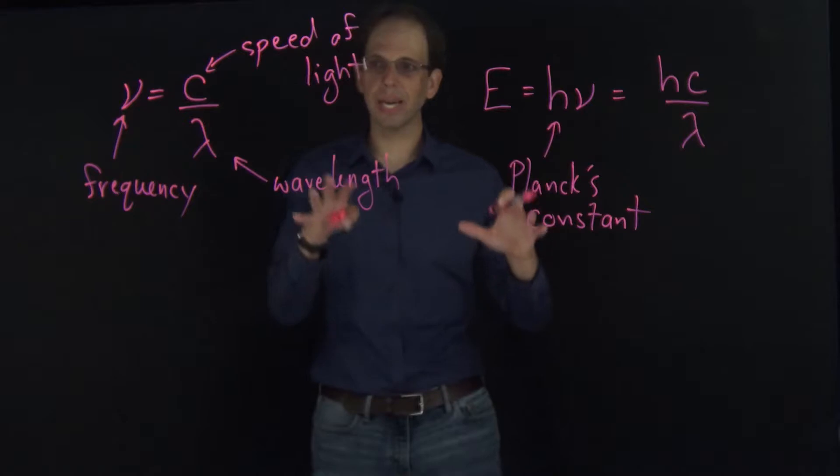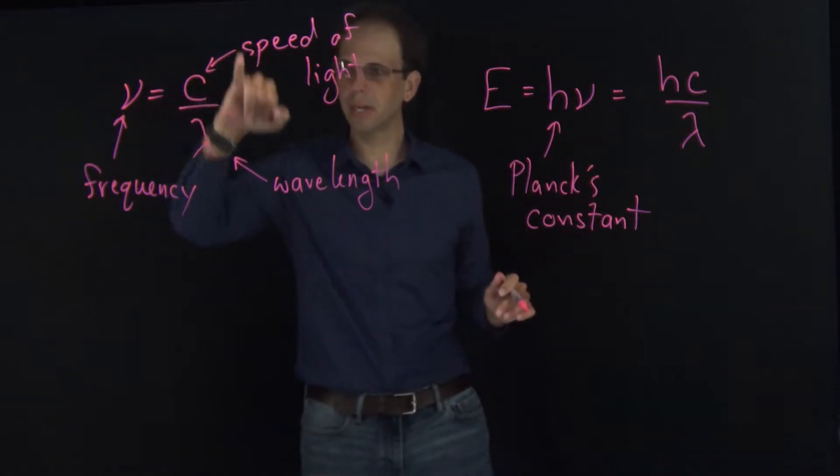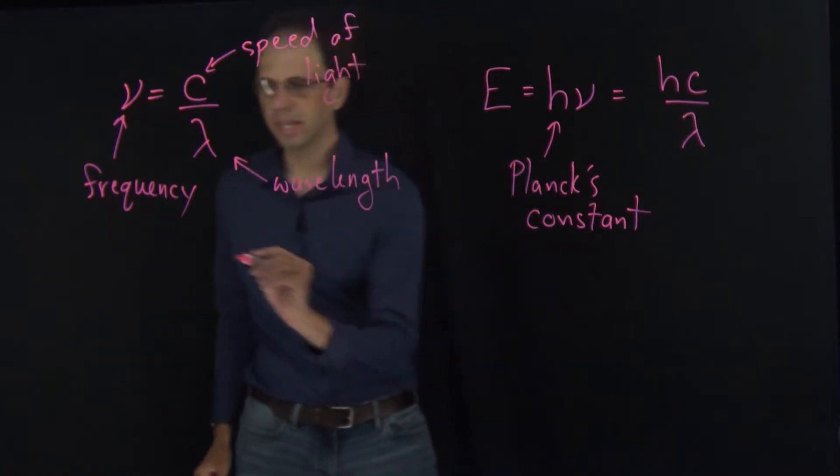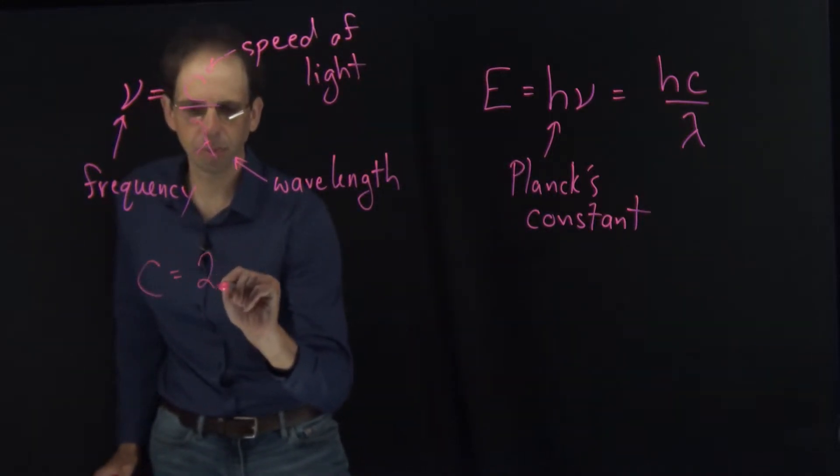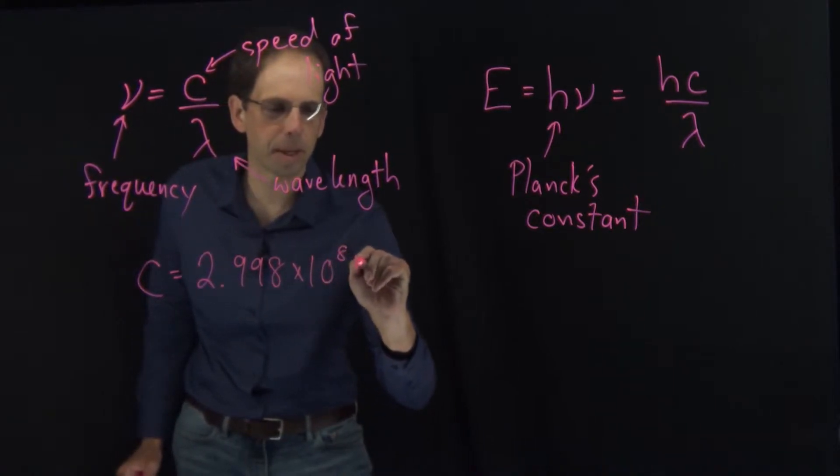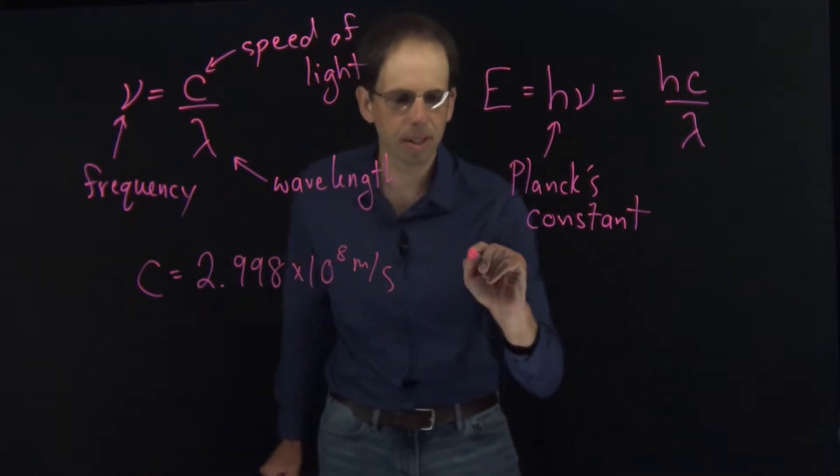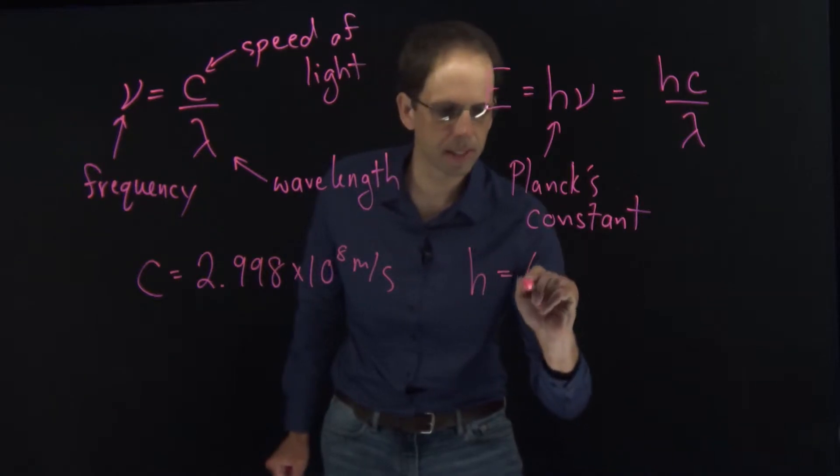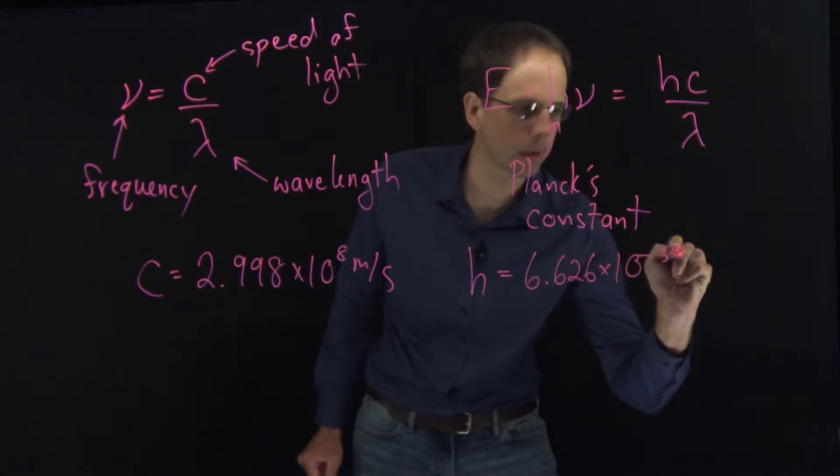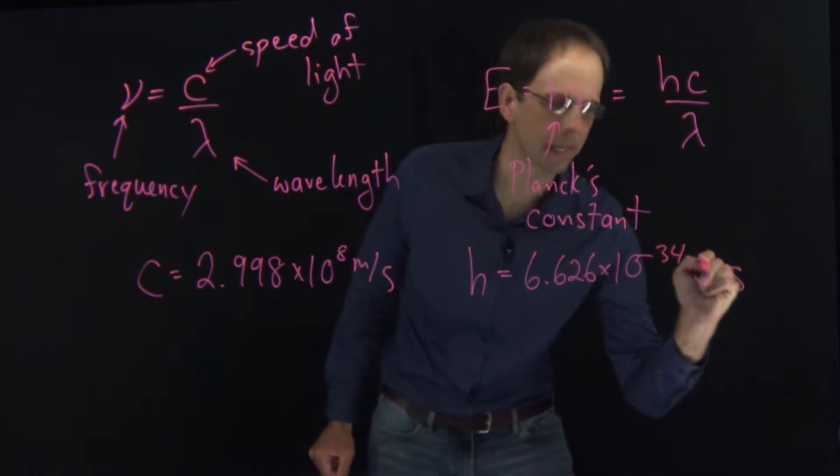Using these expressions, I can interconvert between frequency, wavelength, and energy. The speed of light c is 2.998 times 10 to the 8th meters per second. And Planck's constant h is 6.626 times 10 to the minus 34 joules times seconds.